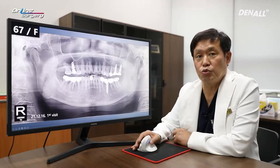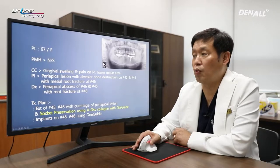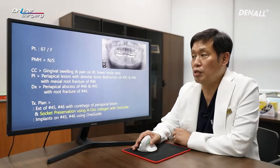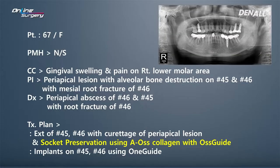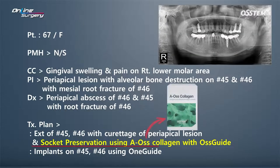The plan was to extract numbers 45 and 46. Because alveolar bone destruction was significant, AOS collagen was to be used for socket preservation.